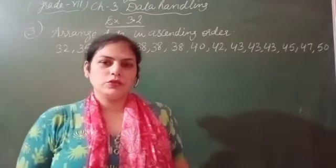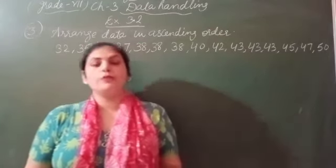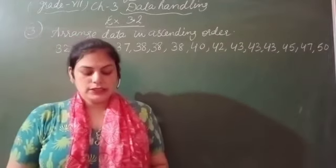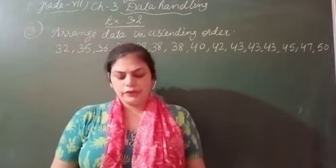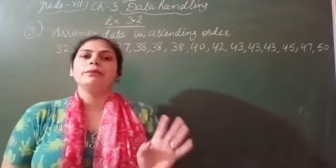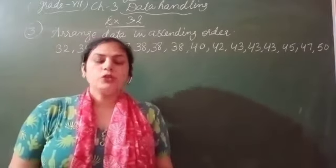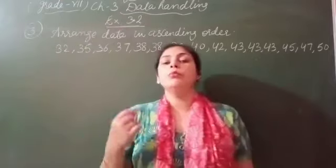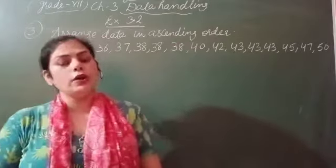Now we start our third question. The weights in kg of 15 students of a class are given here: 38, 42, 35, and so on. You have to find mode and median, and check if the mode and median are the same or not.